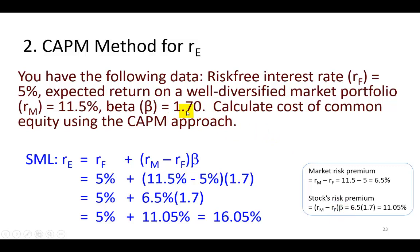This stock is quite a bit more volatile than the market because the beta of the market as a whole is 1. A beta of 1.7 means this stock is 1.7 times as volatile as the market. Adjusting the market risk premium by the beta of this stock gives us the stock's risk premium of 11.05%, telling us that a rational investor would require a return of about 11.05% to compensate for the incremental risk associated with investing in this stock relative to the risk-free asset. When you combine the risk-free interest rate and the risk premium of the stock, you find an estimate of the required rate of return on this common stock, which is also the cost of common equity to the firm.